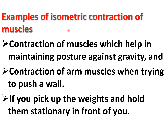Examples of isometric contraction include contraction of the muscles that help in maintaining posture against gravity, and contraction of the arm muscles when trying to push a wall. If you pick up weights and hold them stationary in front of you, that is also isometric contraction.